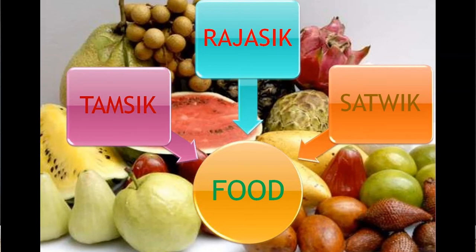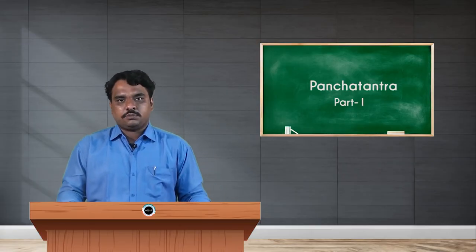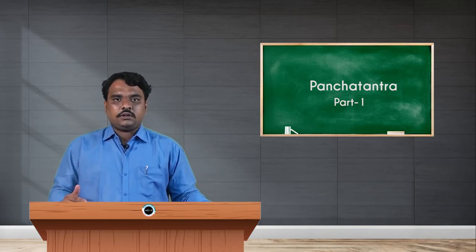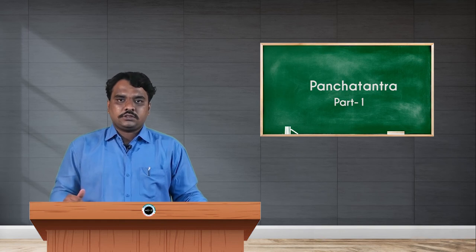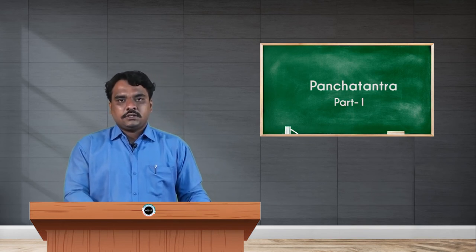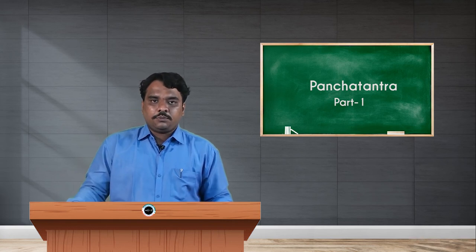Sattvic diet can be considered as a bland diet — less oily, less spicy, with deep fried items to be avoided. It can also be considered as a fresh raw diet, such as raw vegetable salad or fruit salad. Sattvic food should be less spicy, less chili, without deep fried items, and should also be less salty.